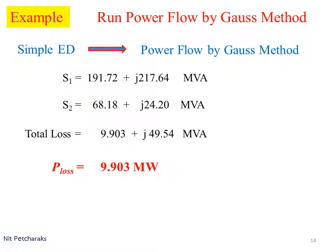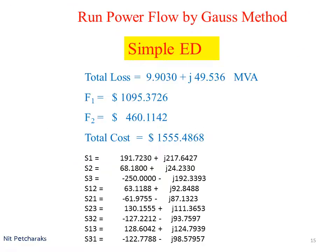The result for power flow indicates that the total power loss should be 9.9 megawatt. Total production cost is $1,555.5.